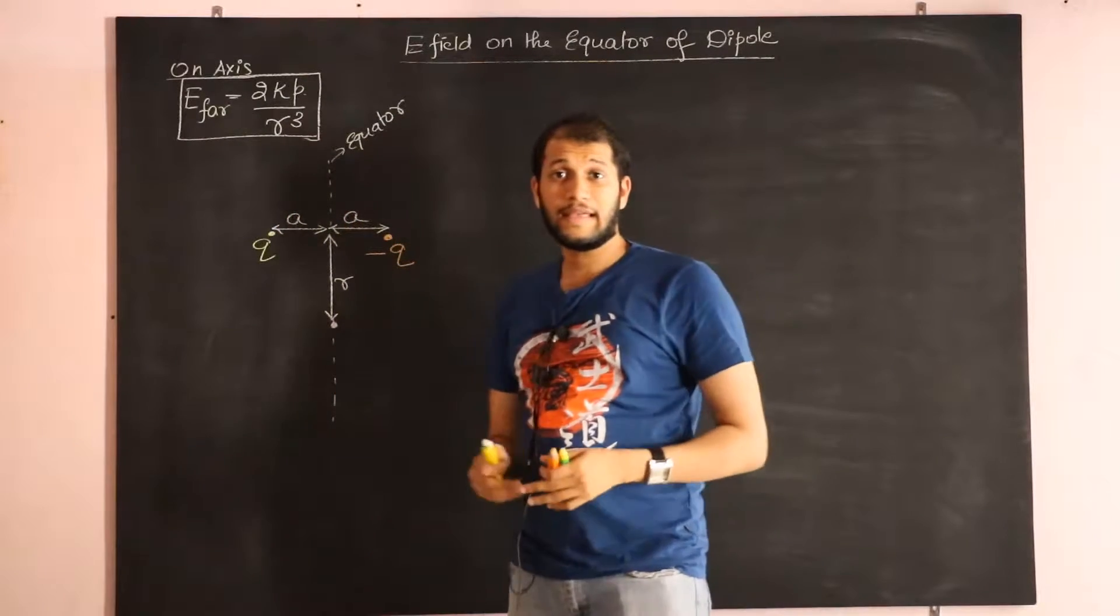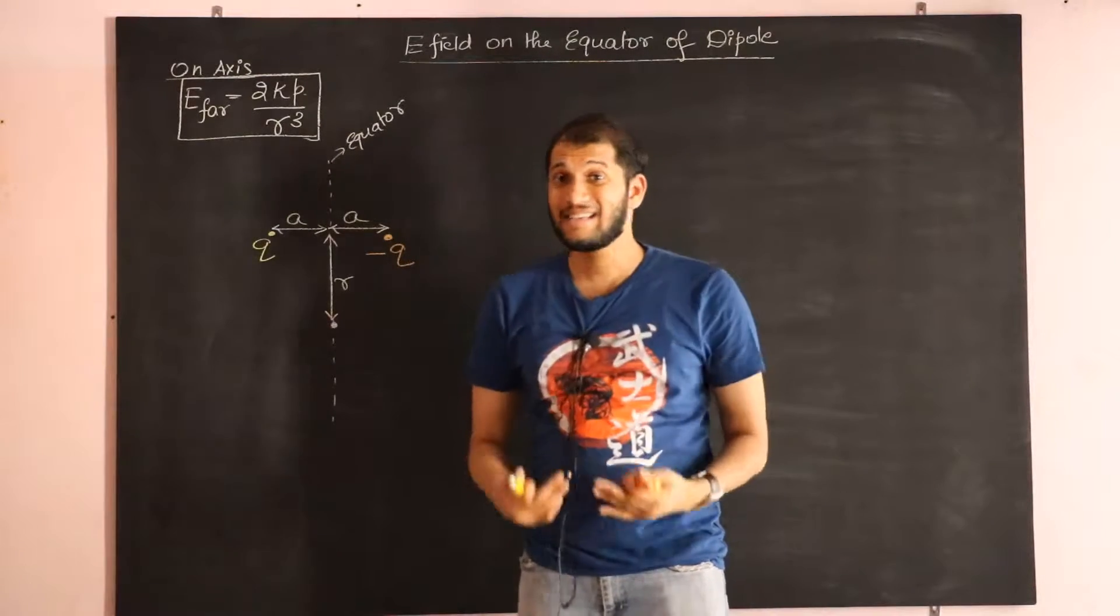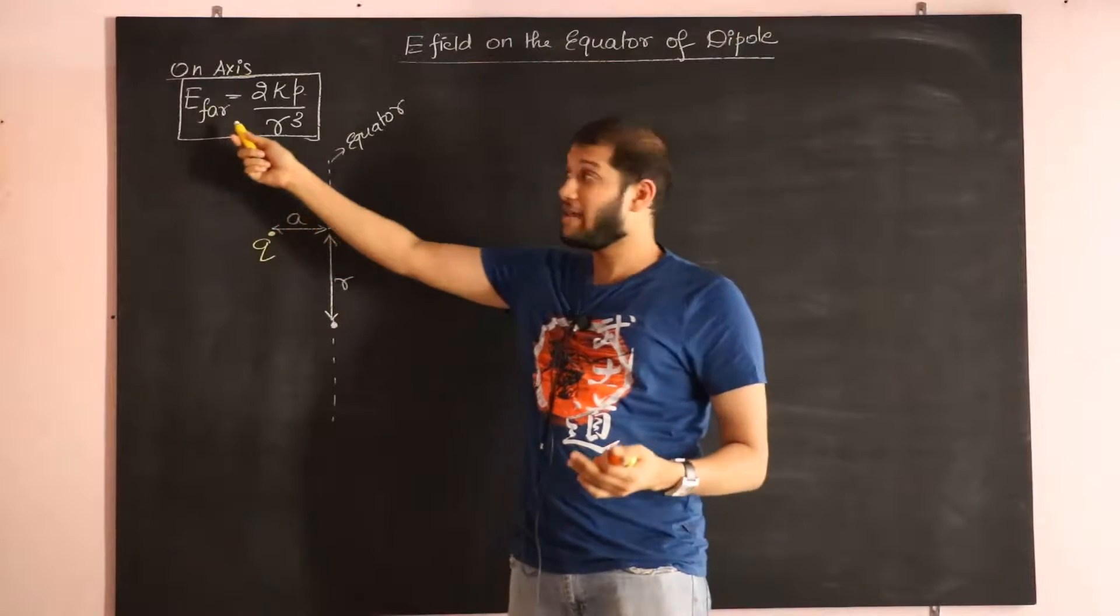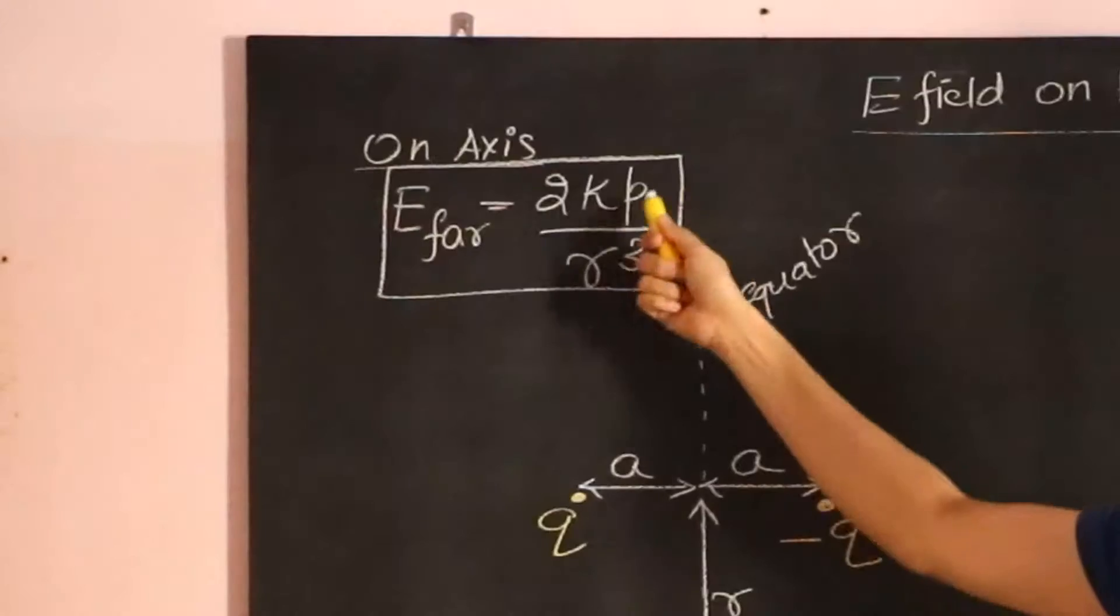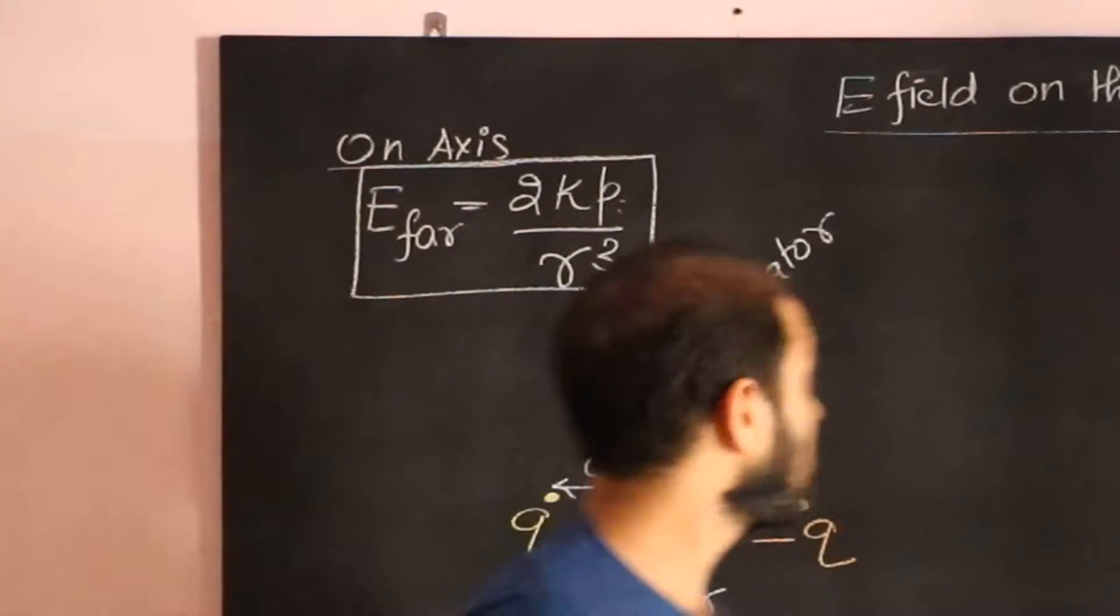We already spoke about calculating electric field due to a dipole on the axis of it. The far away electric field on the axis looks like this, where P is called the dipole moment, and we define P as the product of the charge Q and the distance 2a between them.